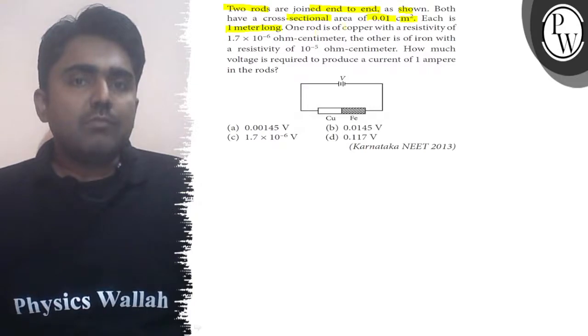One rod is made of copper having resistivity 1.7 × 10⁻⁶ ohm-centimeter and the other is made of iron with resistivity 10⁻⁵ ohm-centimeter. How much voltage is required to produce a current of 1 ampere in the rod?